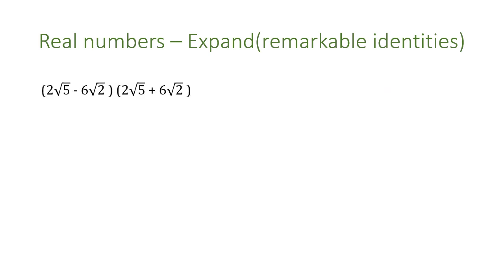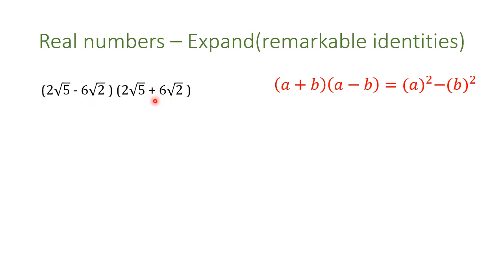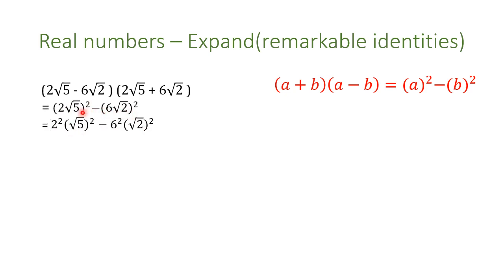Another example on remarkable identities, also in the form of (a + b)(a − b): we have the negative sign and the positive sign, and these numbers are the same. Pause the video and solve it. The first number squared minus the second number squared — the square applies to 2 and radical 5 because of the parenthesis, and the same for 6 and radical 2. We do the math and here is our final answer.